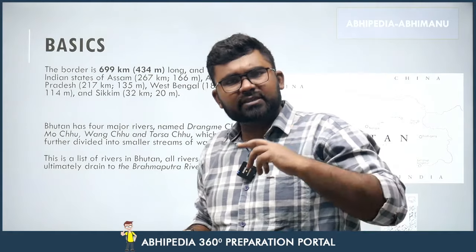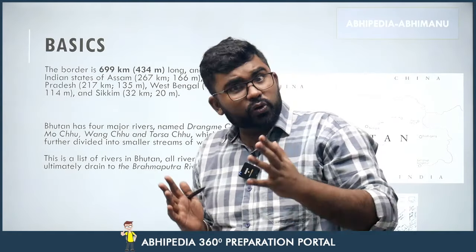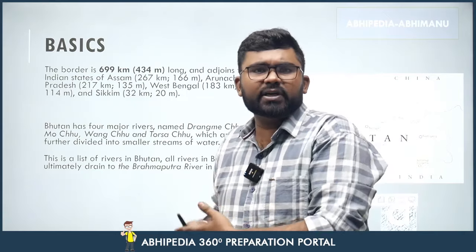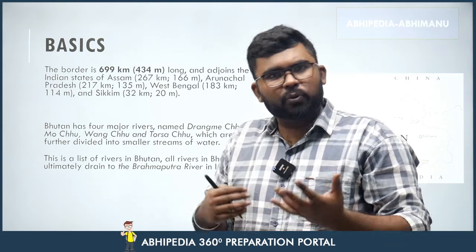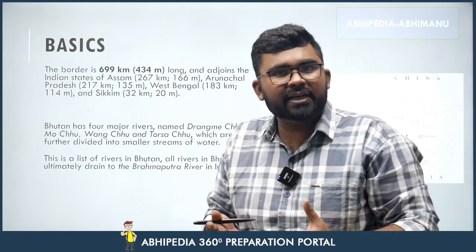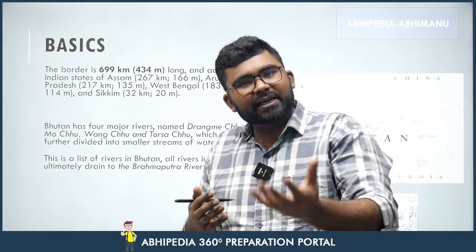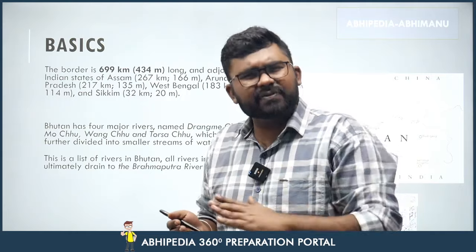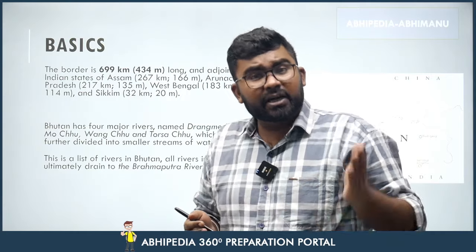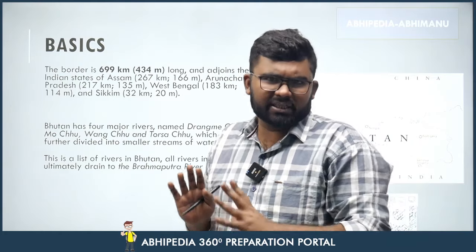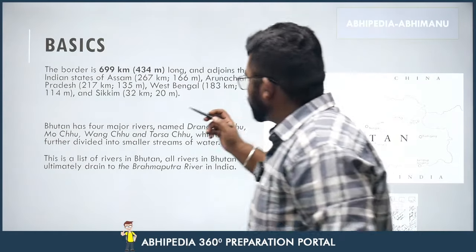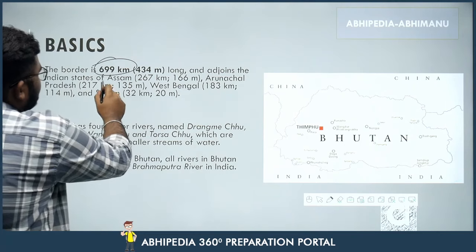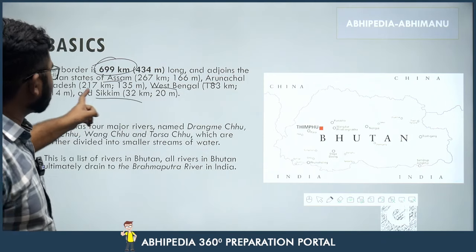Bhutan has two international borders — one with India and the other with China — both giants. Bhutan's allegiance is towards India because of common values. Bhutan is a small, peaceful, and religious country. China is a little aggressive in nature regarding borders and religion, whereas India is not. Bhutan's border with India is 700 km long, shared across 4 states: Assam, Arunachal Pradesh, West Bengal, and Sikkim. The longest border is with Assam.